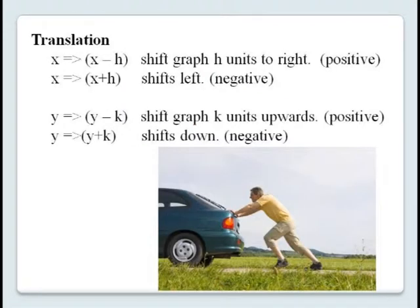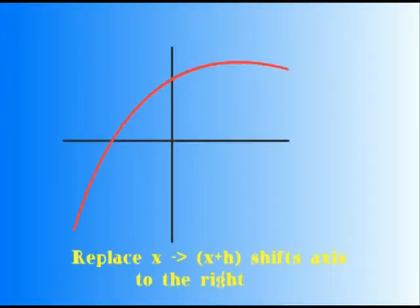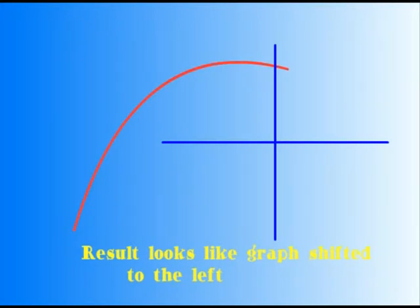The rule for translating a graph is as follows. If you replace x by x minus h in your equation, this will shift your graph h units to the right, or in the positive x direction. If you replace x by x plus h, your graph will shift h units to the left. Similarly, replacing y by y minus k shifts the graph k units upwards, and replacing y by y plus k shifts the graph k units downwards. This seems counterintuitive, since a minus h moves positive and a plus h moves negative — but a plus h actually moves the axis in the positive direction, making the graph appear to move in the negative direction.